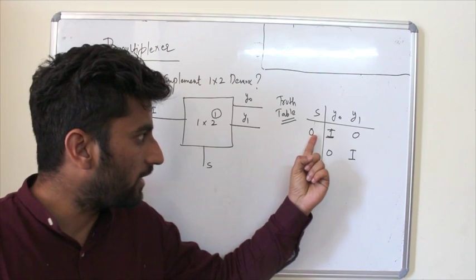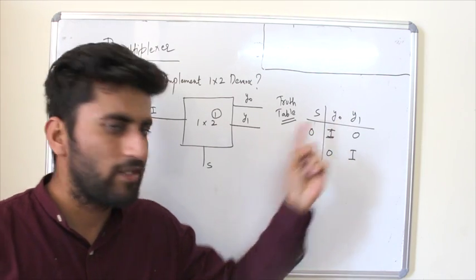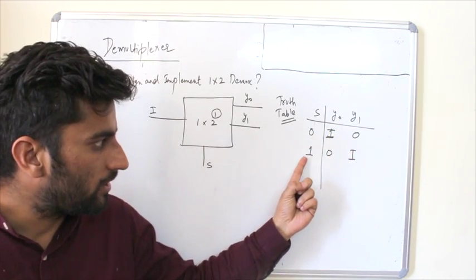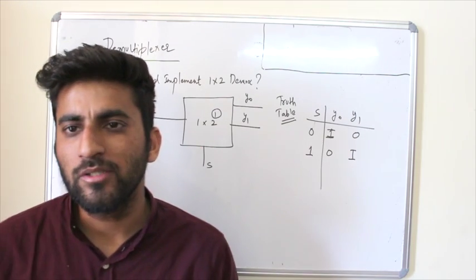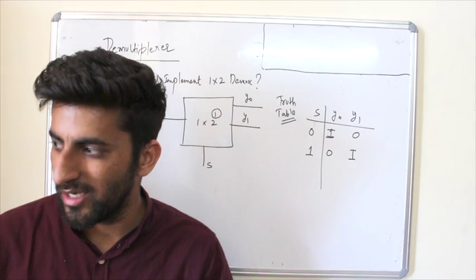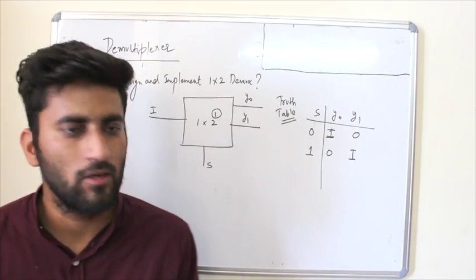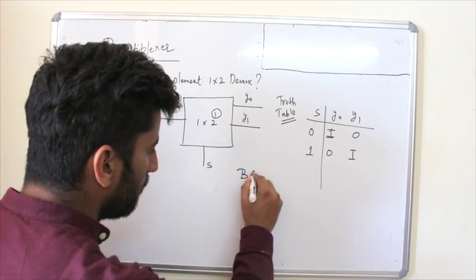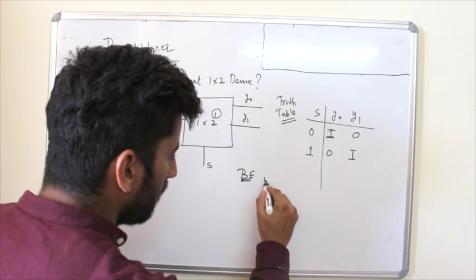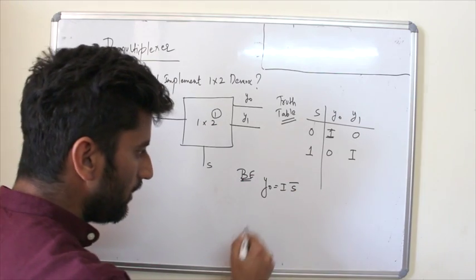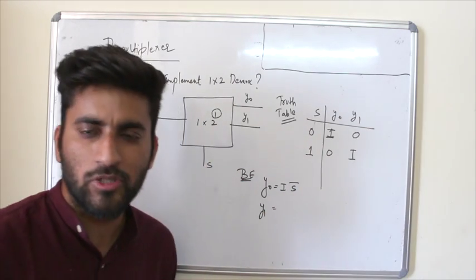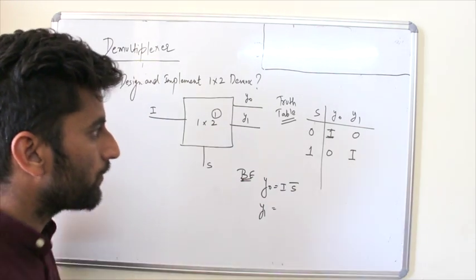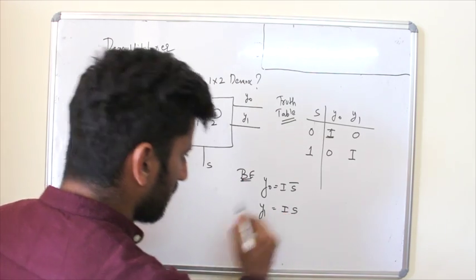Okay, so this select line is basically representing the outputs' corresponding decimal values. Okay, easy to remember. So it's very simple to get the boolean expression, which is y0 can be written as i s-bar simply. We have two outputs. We don't have to add. In demultiplexer, we have more outputs, so this is i s bar and what about y1? This becomes i s, okay.